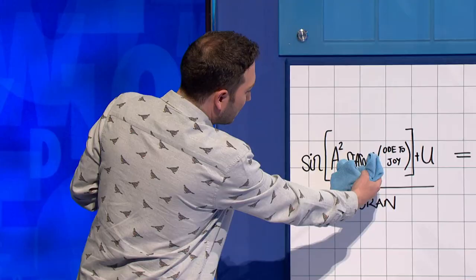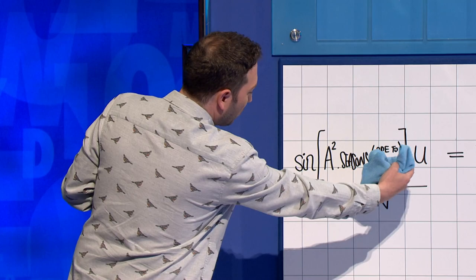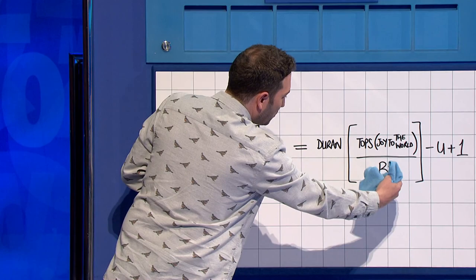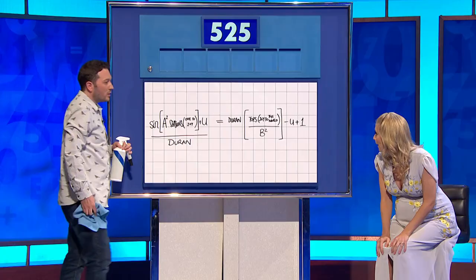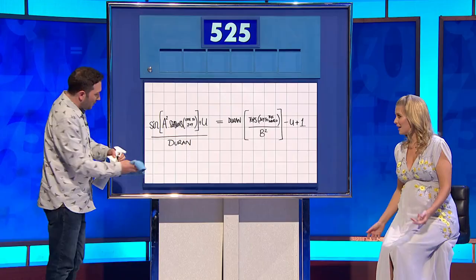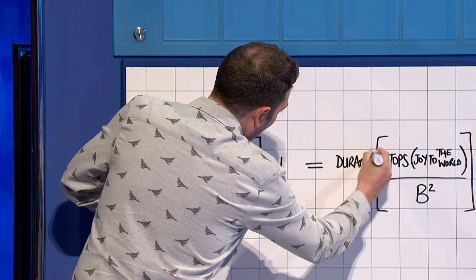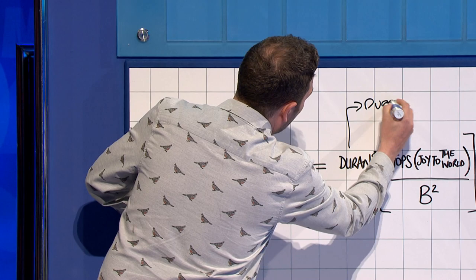Sine A squared, Seasons, times by Ode to Joy, plus U, all over Duran, equals Duran, multiplied by Tops, brackets, Joy to the World, all over B squared, all minus U plus one. You'd times by Duran, wouldn't you? That's what you do. You'd tidy it up, so you'd times by Duran. That's solving your problem on this side. And then on this side, of course, you'd have Duran squared — or Duran Duran, as they're more popularly known.